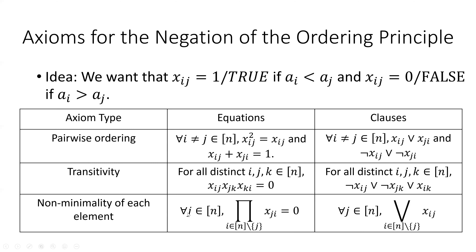And finally, the axioms that for each j in n, the product over i not equal to j of x_ji equals 0. This says that for each j, there must be an i such that a_i is less than a_j — in other words, a_j is not the minimum element. In this way, we can encode the negation of the ordering principle as a set of equations.